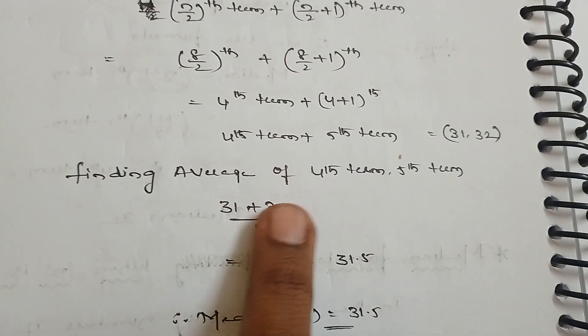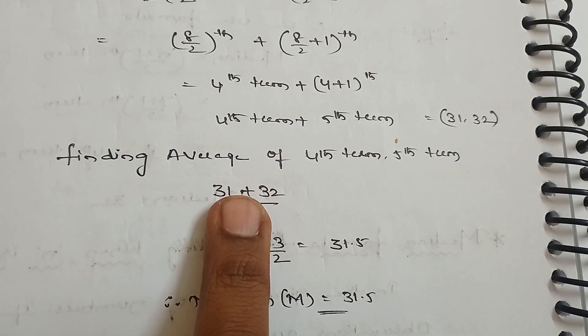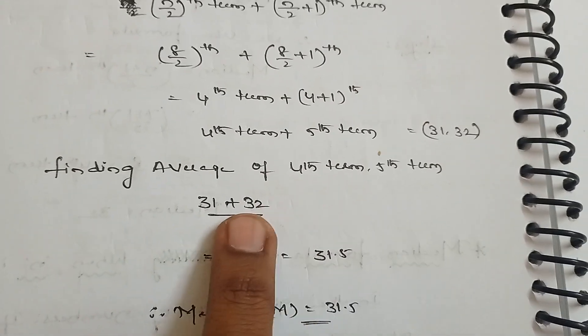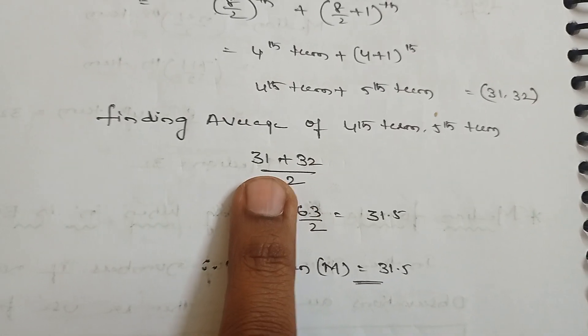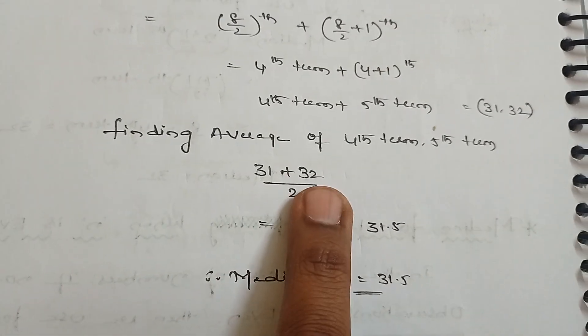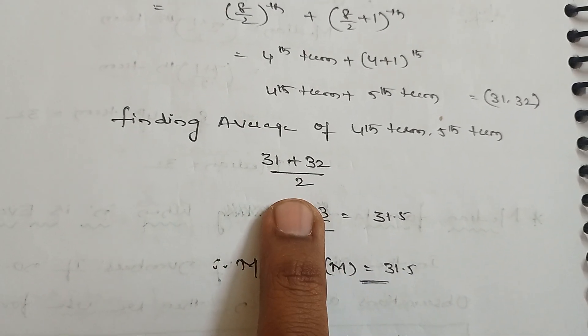Taking the average of the 4th term and 5th term from the ascending order arrangement, that is 31 and 32. Taking the average of these two: (31 + 32) / 2 = 31.5.